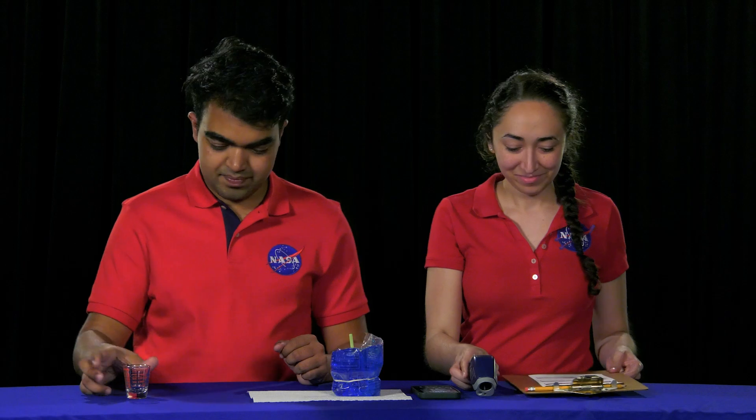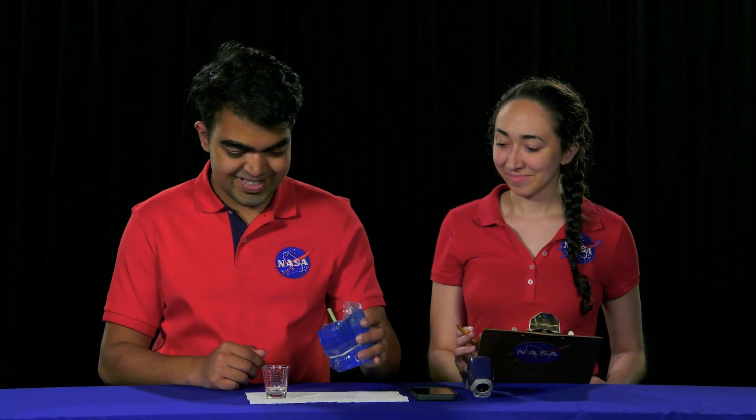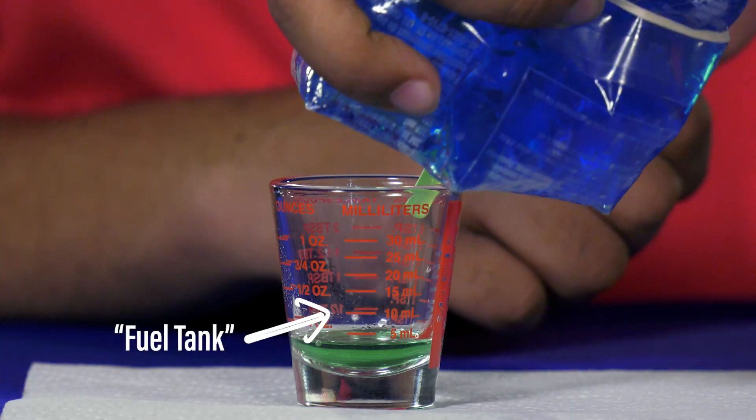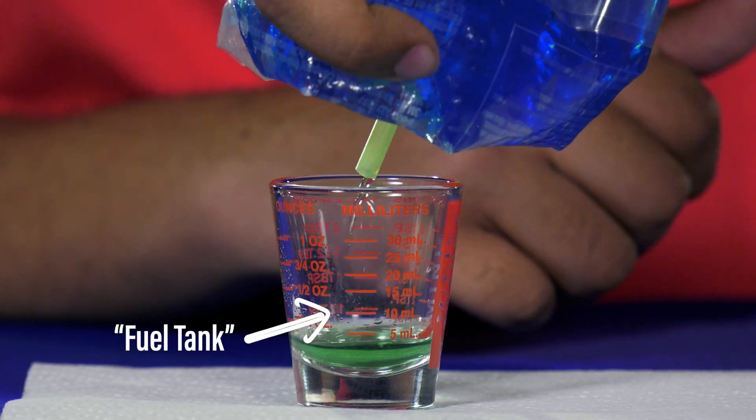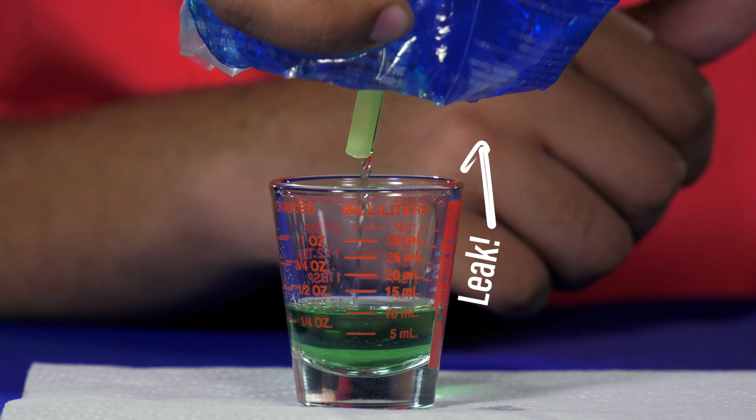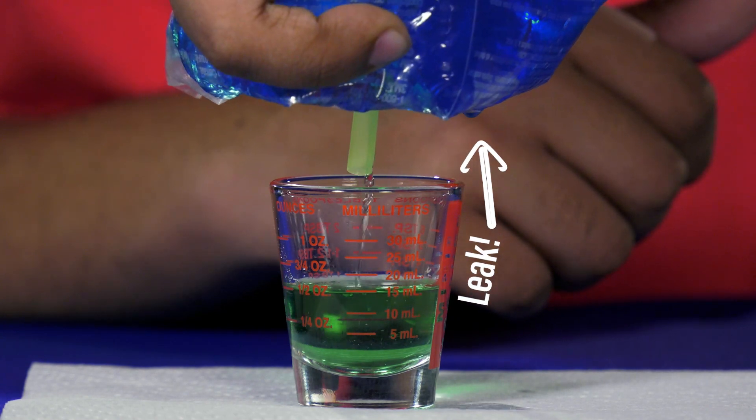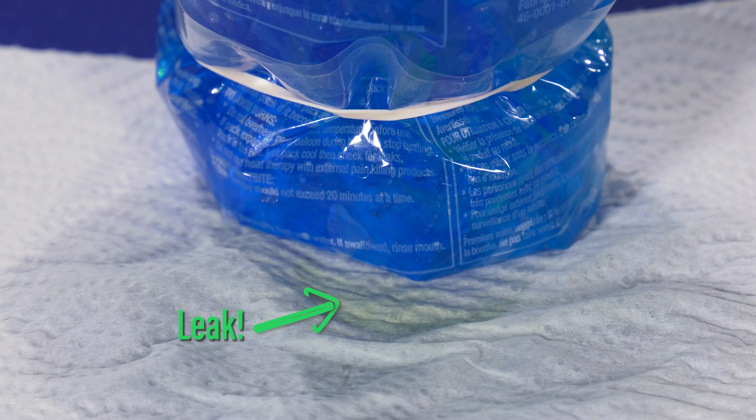Time to see how much evaporation occurred over 24 hours. Collect your data and then transfer the liquid from the storage container to the fuel tank of your spacecraft. We recommend using a measuring device as your spacecraft's fuel tank to make things easier. Evaluate your designs. How well did the transfer systems work? If you have time, redesign, build, and try again, just like a NASA engineer would.